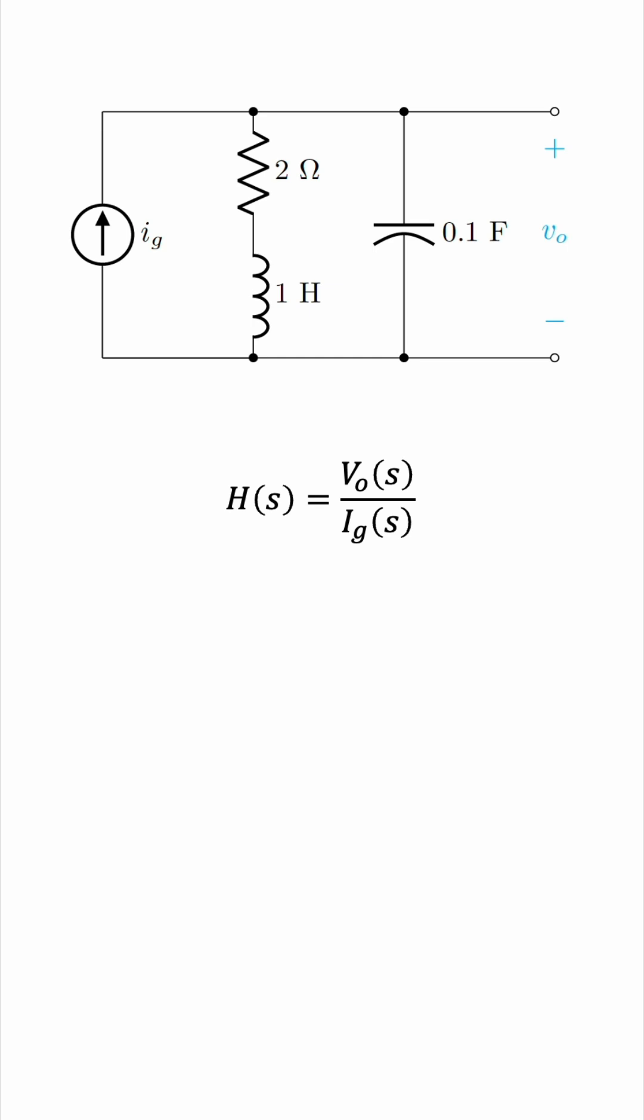The first step in finding the transfer function is to redraw the circuit in the S domain. To do so, we have to find the impedances of the different components. The impedance of a resistor is the resistance itself, so that will be 2 ohms in this case.